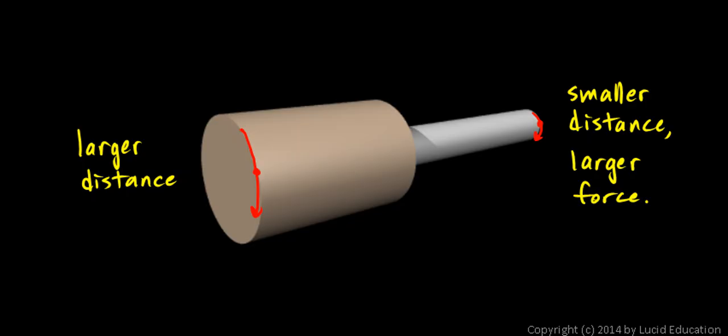You apply a turning force over here, which you would think of as the input force, and you get out a force over here at the tip of the screwdriver that screws the screw into a piece of wood.